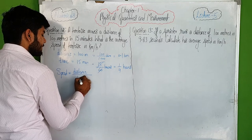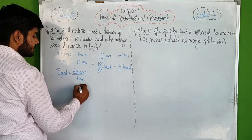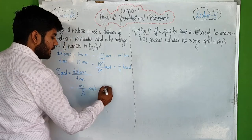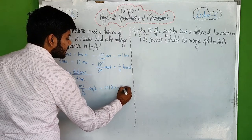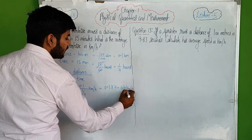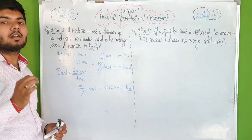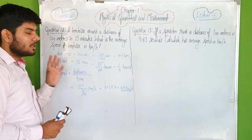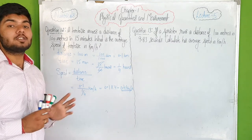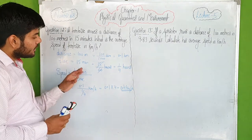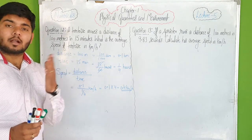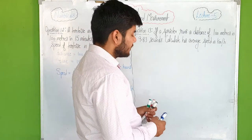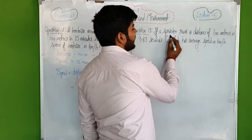Speed equals distance upon time. Distance is 0.1 km and time is 1 upon 4 hours. So speed equals 0.1 multiplied by 4, which equals 0.4 kilometers per hour. Dear students, the main focus here is simply keeping track of unit conversions, because a small mistake in conversion will make your whole numerical wrong.